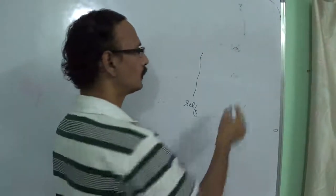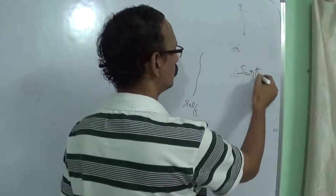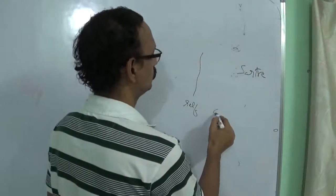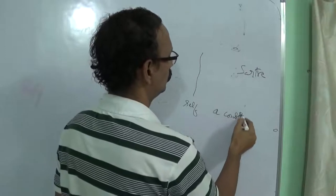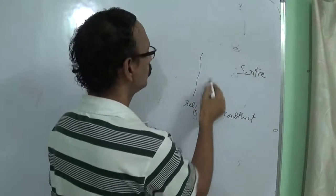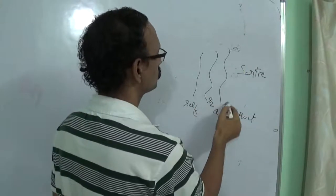And what Sartre wants, he would say the self is a construct, you are constructing it and S2 is possible, S3 is possible.